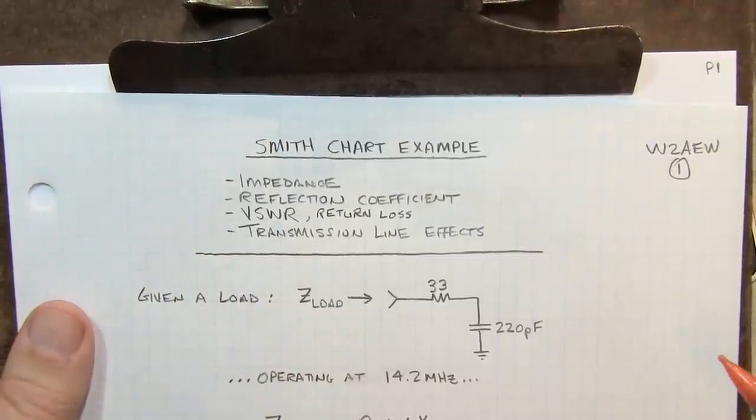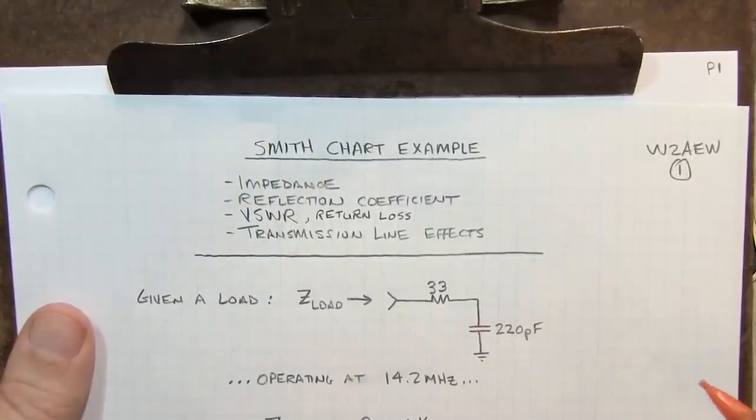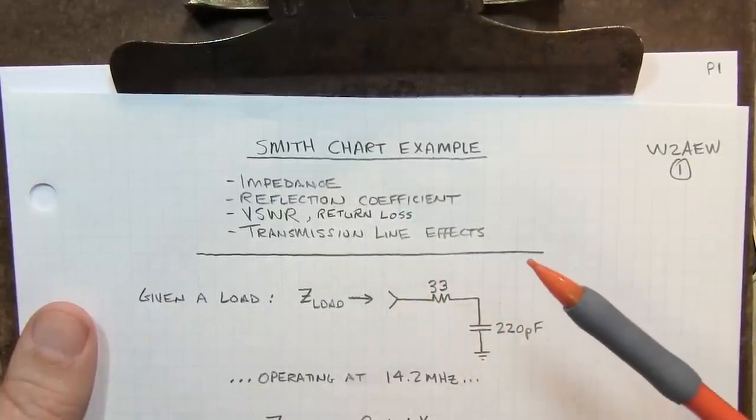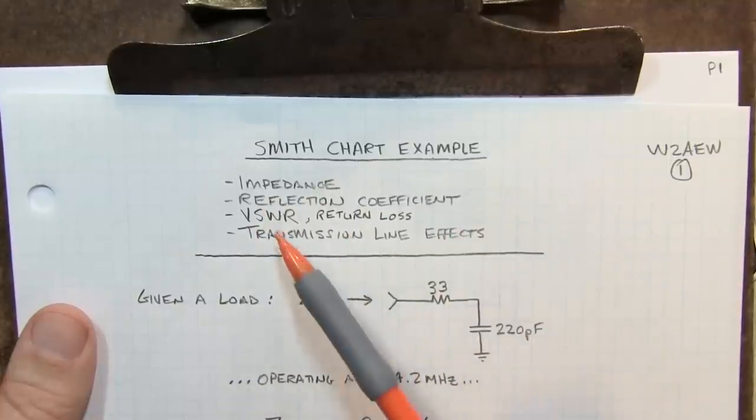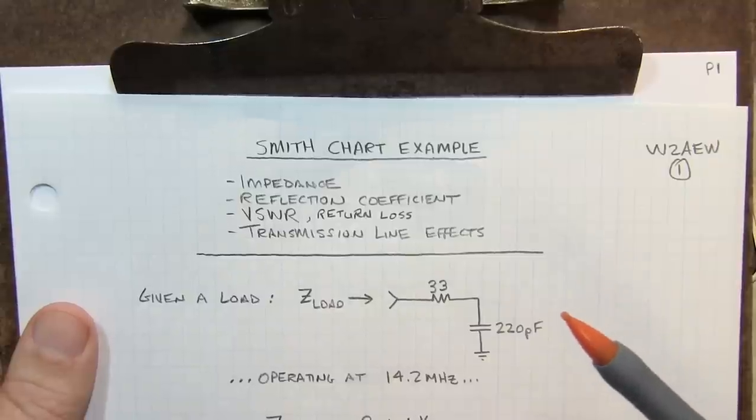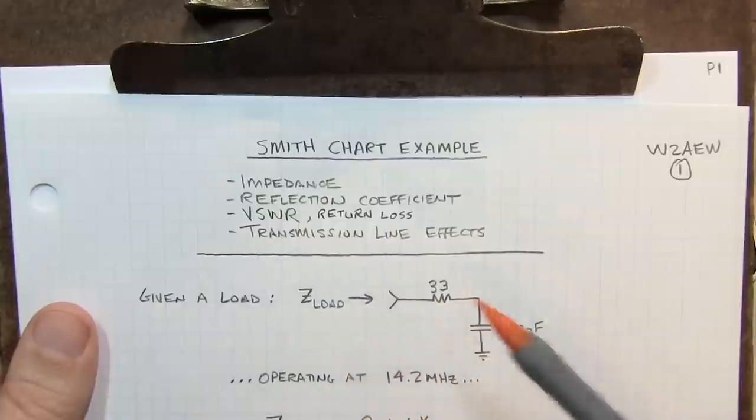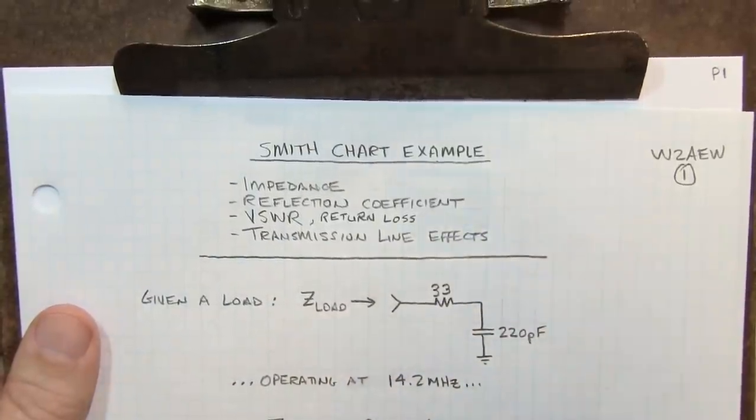In my previous video, we looked at the Smith chart and how impedance and admittance components are represented and how to convert between them. Today we're going to take a more practical look at the Smith chart and plot an impedance, look at some additional scales to extract reflection coefficient, VSWR, return loss, and more. Then we'll get into the magic of the Smith chart and better understand transmission line effects and what that does to the impedance seen looking into the line.